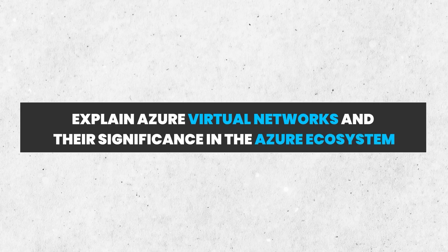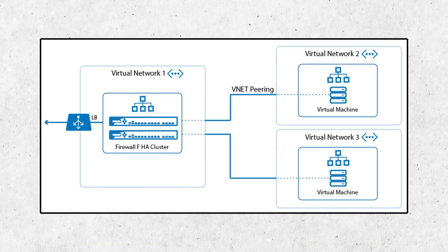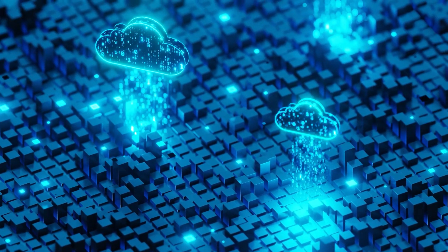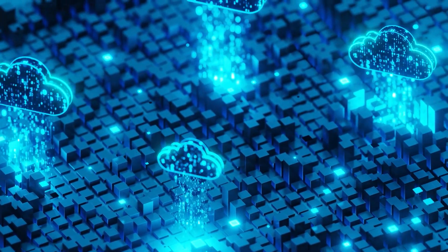Explain Azure Virtual Networks and their significance in the Azure ecosystem. When we talk about Azure Virtual Networks, known as VNet, they play a wide role in the Azure ecosystem. They are fundamental networking components that allow users to create a private, isolated environment in the cloud. The significance of Azure Virtual Networks lies in their ability to provide a secure and scalable way to design and manage cloud infrastructure.